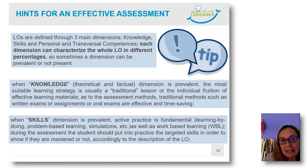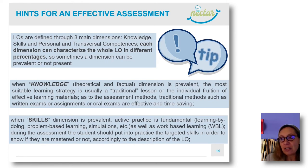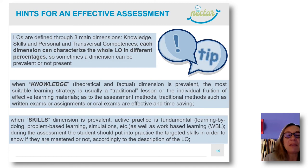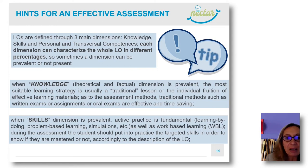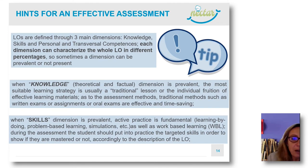The learning outcomes included in our curriculum include three main dimensions. But each dimension, depending on the learning outcome, has a different weight with respect to the overall learning outcome. Sometimes the dimension of knowledge is prevalent, sometimes skills are prevalent, and so on. Depending on the prevalence or different percentage of the dimension with respect to the whole learning outcome, we can define the proper strategy or assessment method.